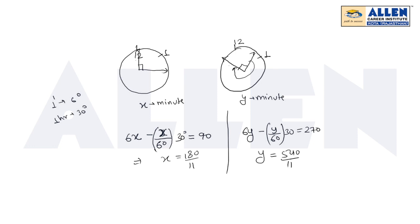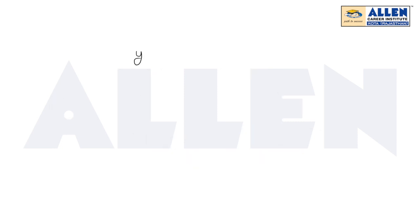The question asks for the difference between these two times in minutes. So y minus x equals 540 upon 11 minus 180 upon 11, which is 360 upon 11. If I convert this to mixed fraction, it will be 32 plus 8 upon 11.